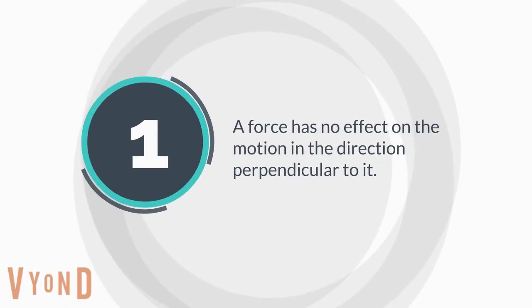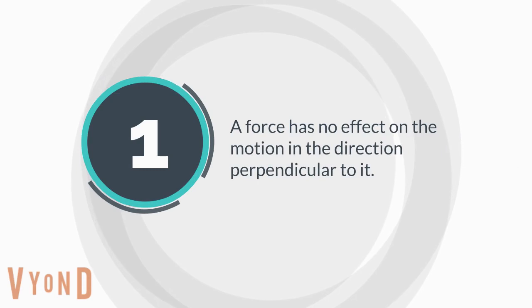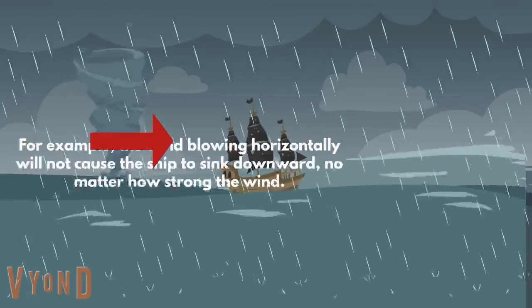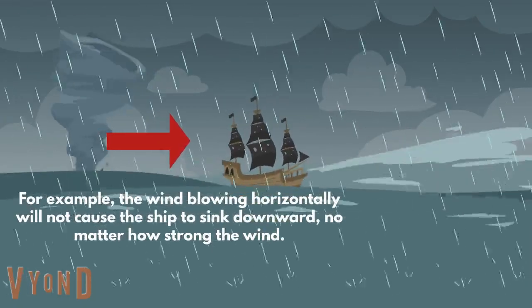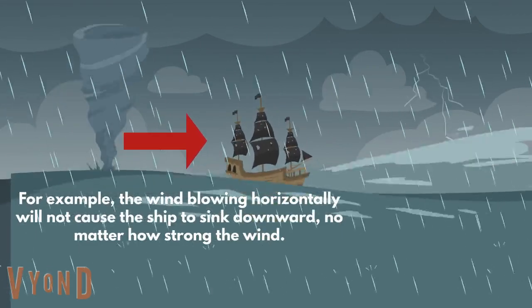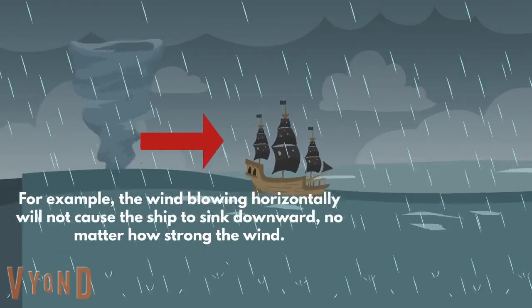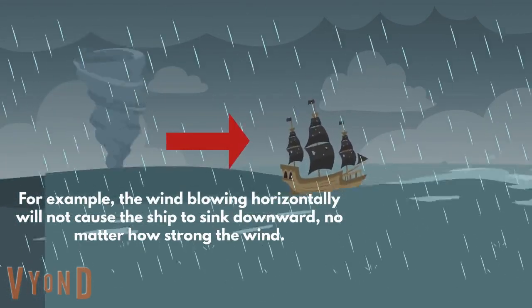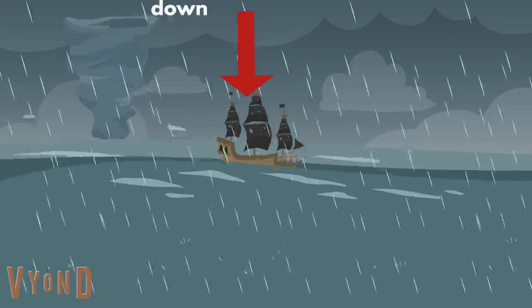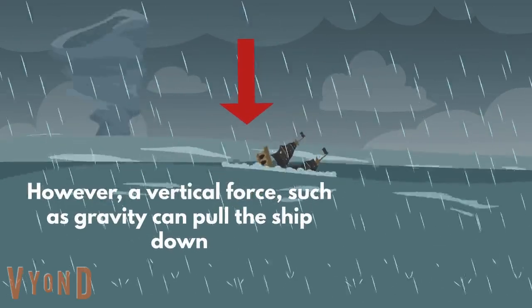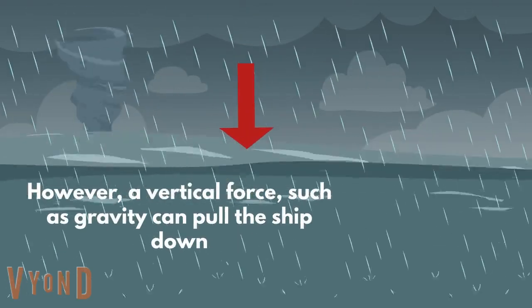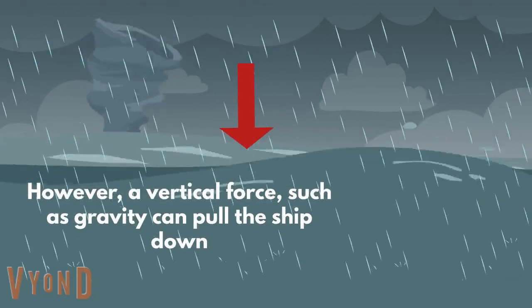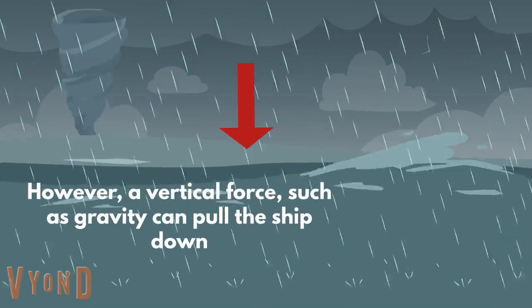Number 1: a force has no effect on the motion in the direction perpendicular to it. For example, the wind blowing horizontally will not cause the ship to sink downward, no matter how strong the wind. However, a vertical force such as gravity can pull the ship down.